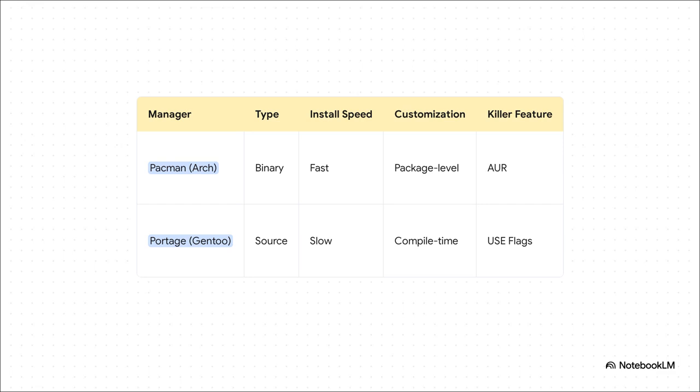For Arch, you've got Pacman. It's binary, so installation is lightning fast. And its killer feature is definitely the AUR — the Arch User Repository — a massive, community-driven treasure trove of software. Then there's Gentoo's Portage. It's source-based, so it's way slower because it has to compile everything. But its killer feature is something called Use Flags — basically little switches you can flip before you even compile a program to turn specific features on or off. The result? A truly minimal and ridiculously customized piece of software.